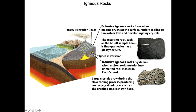So this rock might have the exact same chemistry as that one — unlikely, but it's possible — the only difference being this formed over a long period of time and this formed over an hour or a couple of days or weeks or months. Ten to twenty million years, perhaps, versus a week.